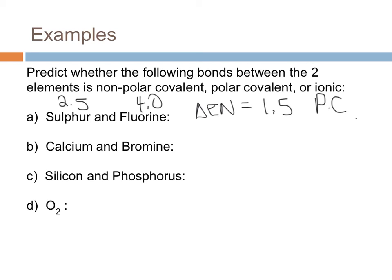For calcium and bromine, calcium is 1.0, bromine is 2.8. So the difference between those two is going to be 2.8 minus 1.0, or 1.8, meaning that's an ionic bond. And that makes sense because we've got a metal and a nonmetal.